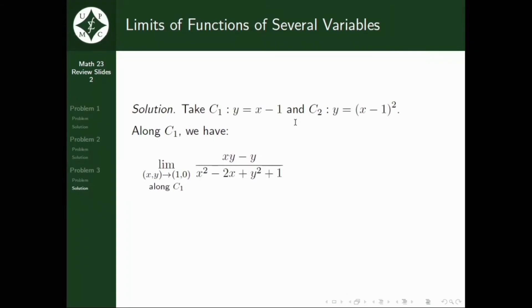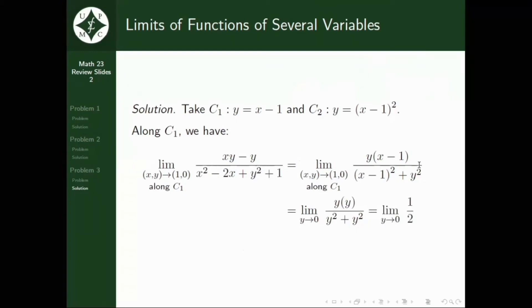So, let's call it C1 curve given by Y equals X minus 1 and the curve 2 given by Y equals the square of X minus 1. So, along the first curve we have this one. We will now be getting the limit of Y times the quantity X minus 1 all over the square of X minus 1 plus Y squared as XY approaches (1, 0). Further simplifying, this will now just be equal to the limit of Y times Y all over Y squared plus Y squared as Y approaches 0. So, this will be now the limit of 1 half as Y approaches 0 which is just equal to 1 half.